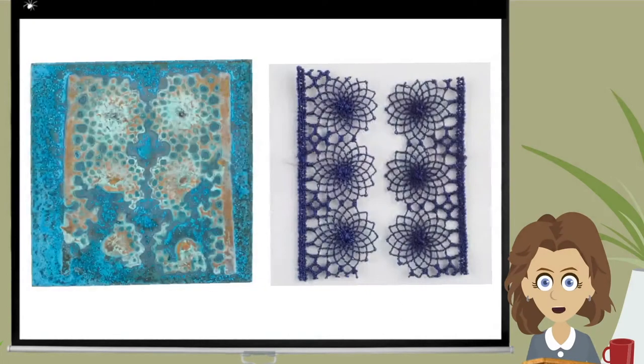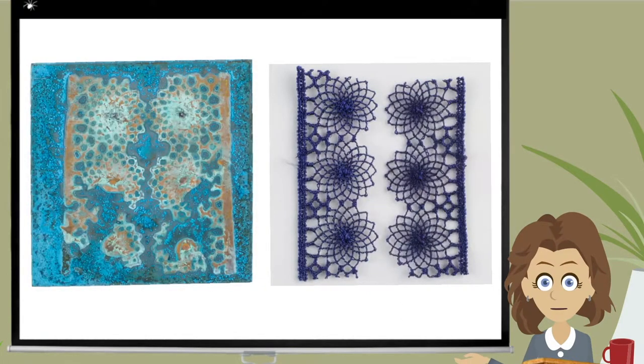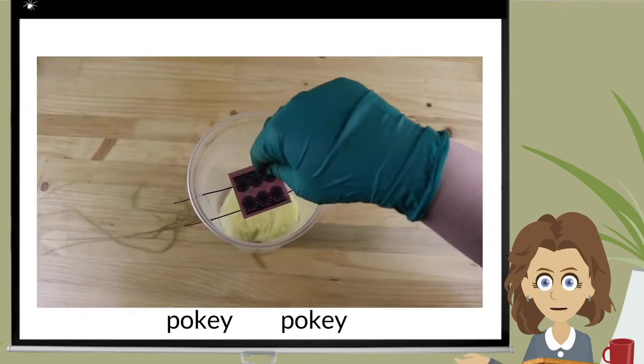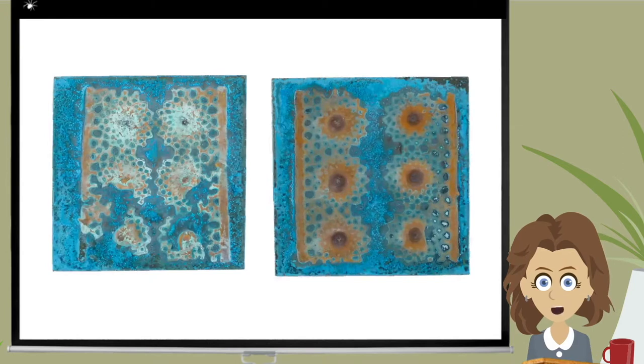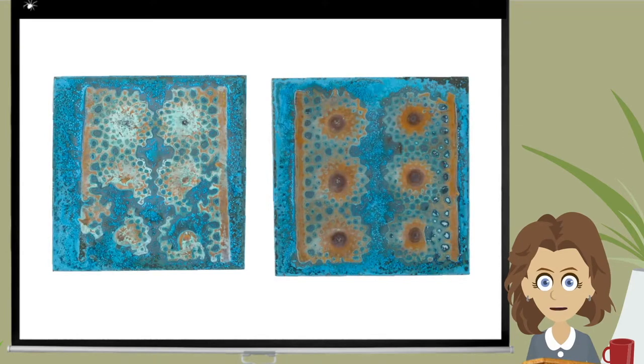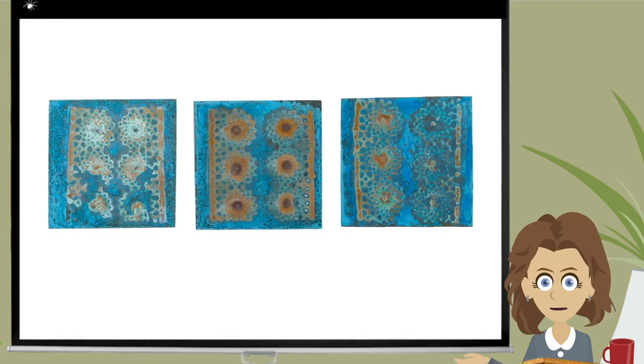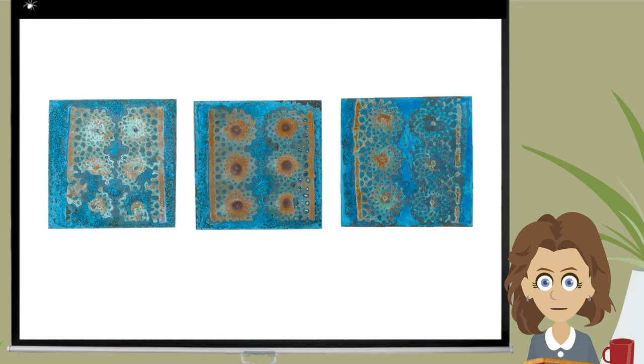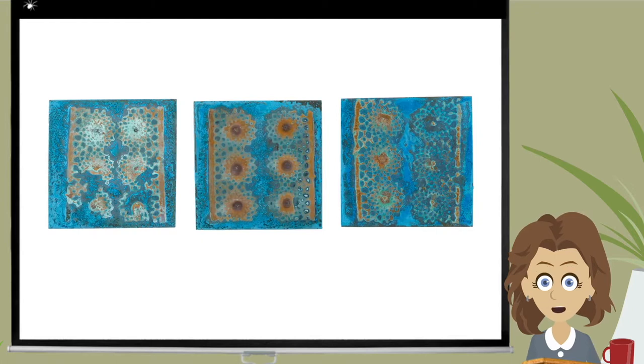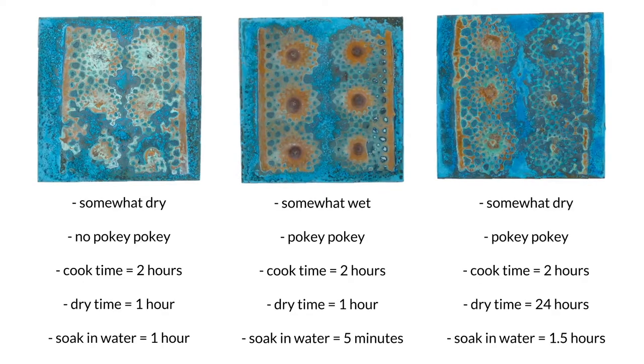Lace sample number three has some areas of tight weave but also has raised areas which make it difficult for the lace to make contact with the copper. A little pokey-pokey after spraying the ammonia salt solution would help to increase lace to copper contact. And just for fun I cooked up one last sample - three very different yet similar patina effects. I think these three samples illustrate nicely the touchiness of patina making. It would seem the smallest change in a patina recipe will have an effect on the results, something to keep in mind when playing with lace.